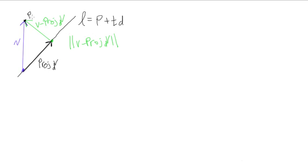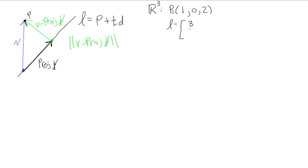Let's pick some values and work through a real example — actually let's do an example in R3. I want to show you that you can do this with three components, or in three-dimensional space, just as easily as in two-dimensional space. Let's say our point P is at (1, 0, 2). And let's say our line has the equation (3, 1, 1) plus a scalar times our direction vector, which is (-1, 1, 0).